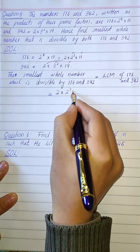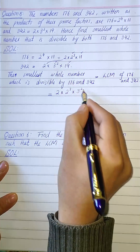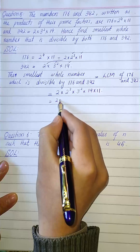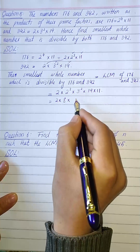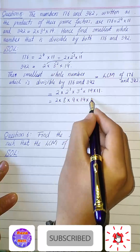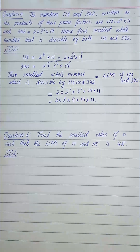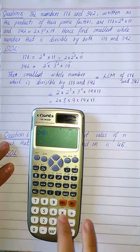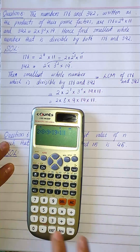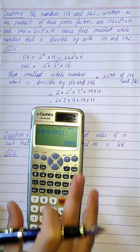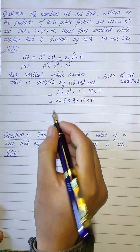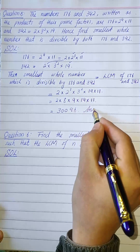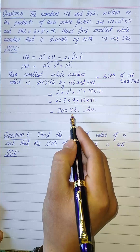So we write: 2 times 2 to the power 3 times 3 to the power 2, which is 9, times 19 times 11. Finding the product using a calculator: 2 times 8 times 9 times 19 times 11, the answer is 30,096. This is the smallest whole number which can be divided by both 176 and 342.